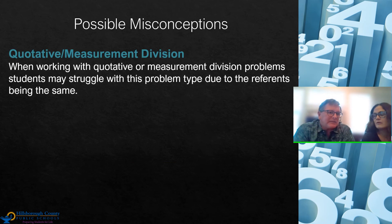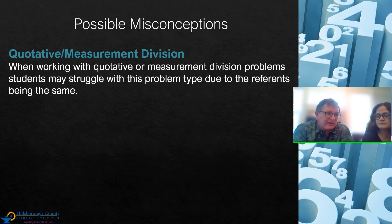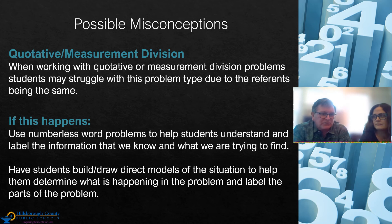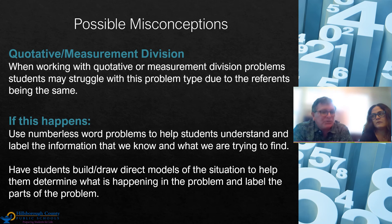One possible misconception is with quotative or measurement division where the referents are the same. Think back to the cookie problem where you were taking cookies from cookies — you had 15 cookies and were putting three cookies in a box. That can be a struggle for some students. Numberless word problems that focus on sense-making, as well as students directly modeling the situation, will support addressing that misconception.